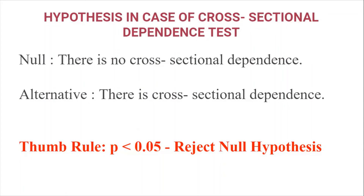The hypothesis in case of the cross-sectional dependence test is: the null hypothesis is that there is no cross-sectional dependence, against the alternative that there is cross-sectional dependence. The thumb rule we follow is that if the probability value is less than 5% level of significance, then we reject the null hypothesis. So if the p-value is less than 0.05, we reject the null of no cross-sectional dependence and conclude that cross-sectional dependence is present, meaning you need to perform the second generation panel unit root test.